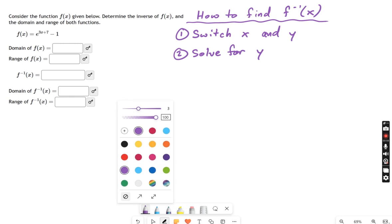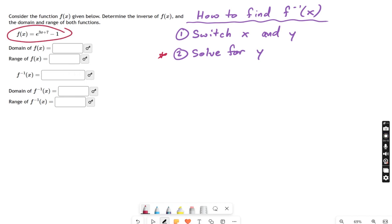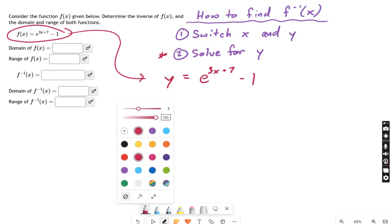Sometimes solving for y is hard, right? This step can be tricky, but let's see how it works for this problem. I'm going to take this equation over here that we're using and just bring that down over here so we can work on it. And instead of saying f of x, I'm just going to say y. So y equals e to the 3x plus 7 minus 1. Excuse me, I wrote that a little wrong. Let's try that again. e to the 3x plus 7 minus 1.